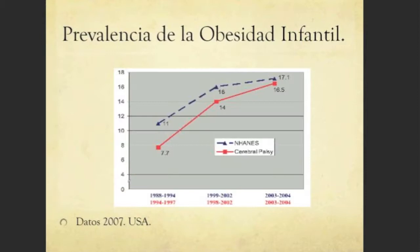Let me introduce the data on the prevalence of obesity in CP children in the United States. This data is from 2007, the same year I started working in Niño Jesús Pediatric Hospital. As you can see in this slide, there is an increase of obesity in CP children — something we see in our population now. So for me it's critical to look at the patient as a whole picture. Never forget the details. If you forget the details, you have problems.